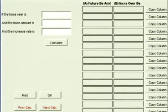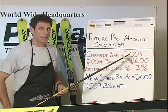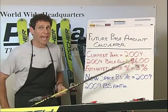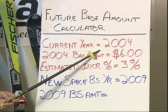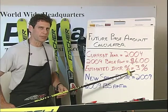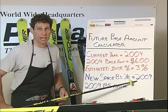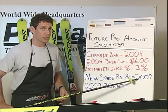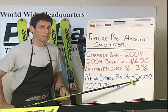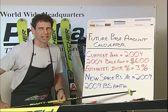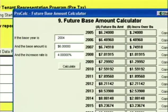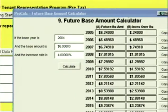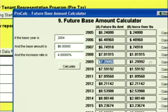Click Next, and we're at the Future Base Amount Calculator. This calculator is great for when you're taking space today but also committing to additional space in the future, and you negotiate new base years for that additional space. For example, today it's 2004 and we commit to some space — the operating base in the building is $6, we assume it'll increase at 3%. Then we have another piece of space we're going to take in 2009 with new base years. If the base year is 2004, the base amount is $6, and the increase rate is 4% a year, this calculator calculates all the future base amounts for the next 15 years. You can just click Copy Column A and copy the base amount for 2009 — $7.29 — into the base amount box.